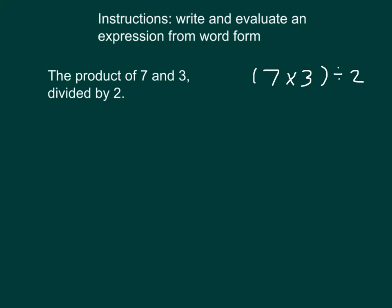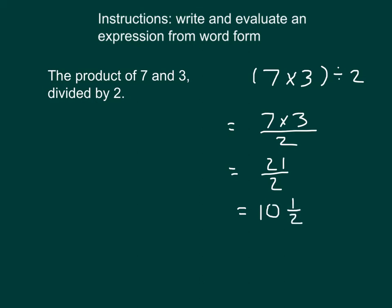We can write this out as a fraction as we are evaluating this. We have 7 times 3 divided by 2, so this equals 7 times 3 halves. 7 times 3 is 21, and we have 21 halves. 2 goes into 21 ten whole times, with a remainder of 1. Therefore, when we are evaluating this expression, we get 10 and a half.